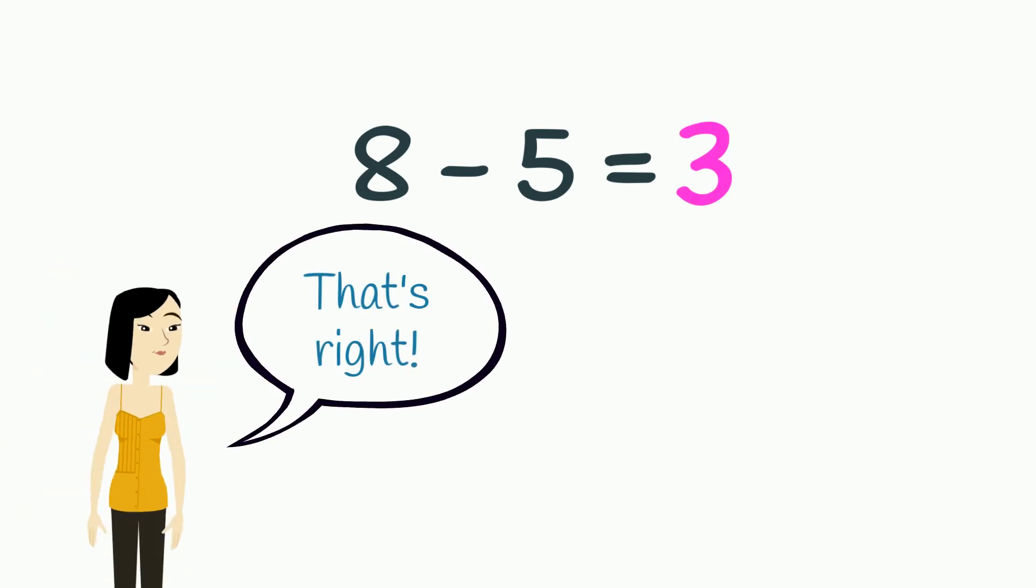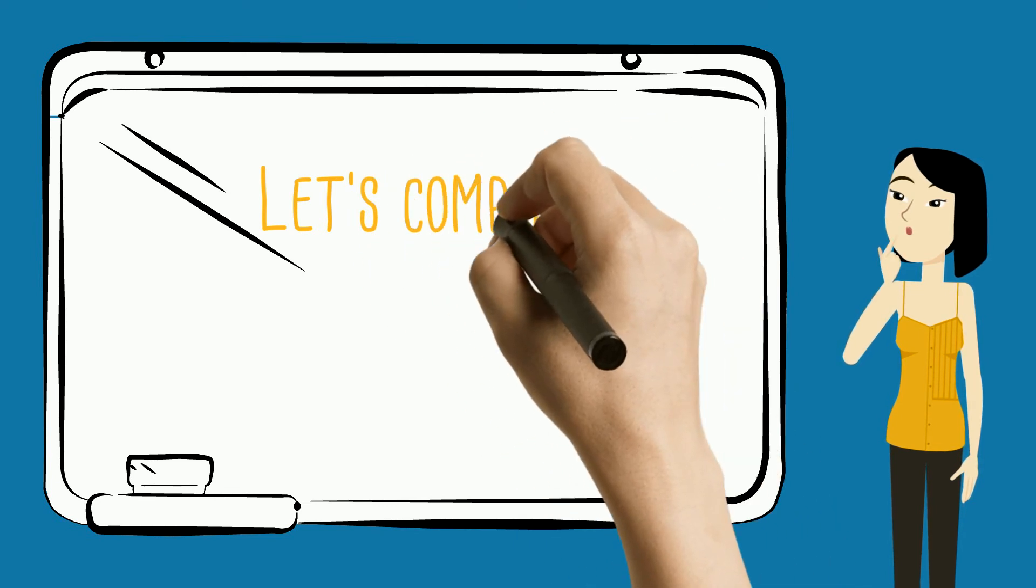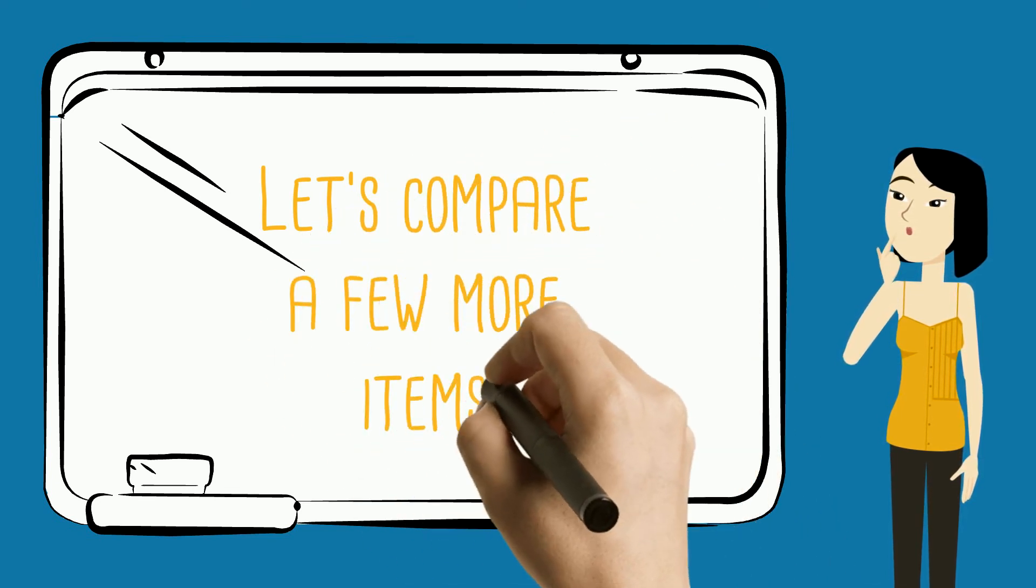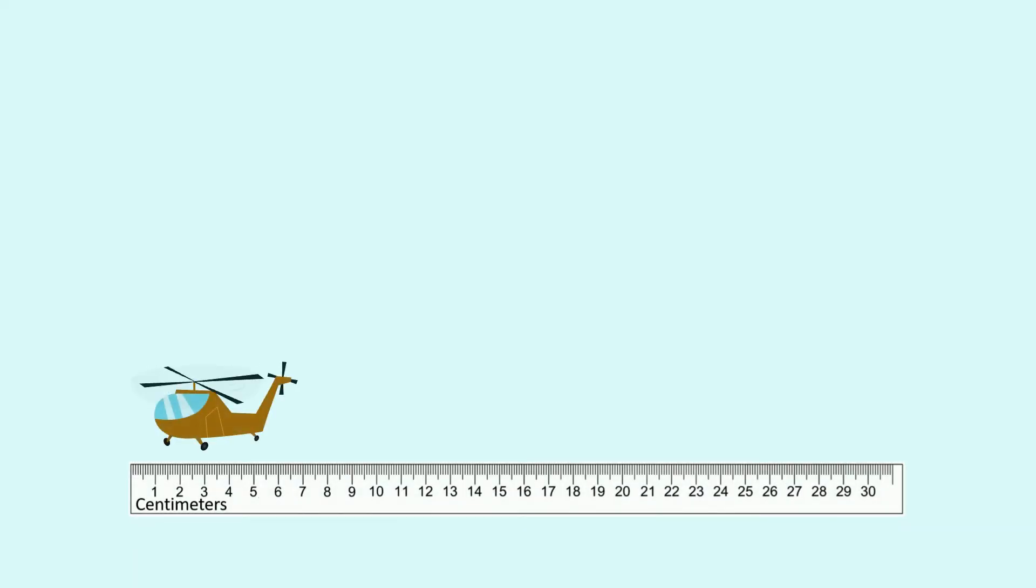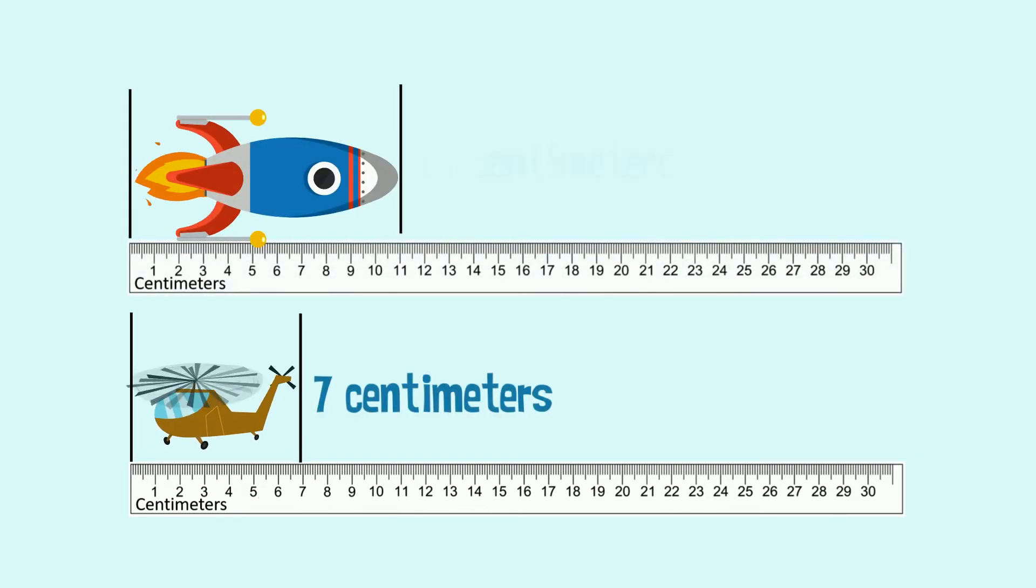Let's compare a few more items. This toy helicopter is seven centimeters long. The toy rocket is 11 centimeters long. Which object is shorter? That's right, the helicopter.